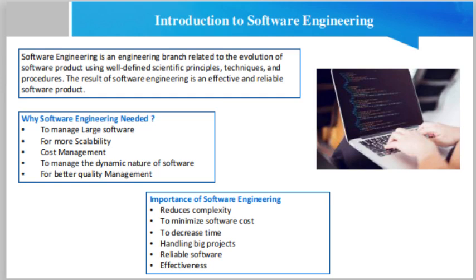To minimize software cost: software needs a lot of hardware, and software engineers are highly paid experts. A lot of manpower is required to develop software with a large number of codes. But in software engineering, programmers plan everything and eliminate things that are not needed. In turn, the cost for software product production becomes less compared to software that does not use the software engineering method.